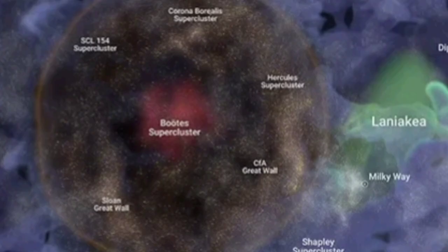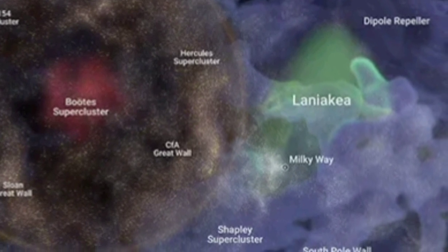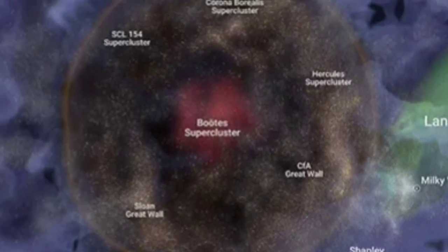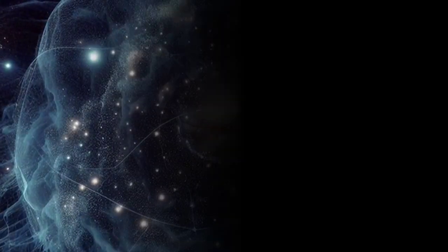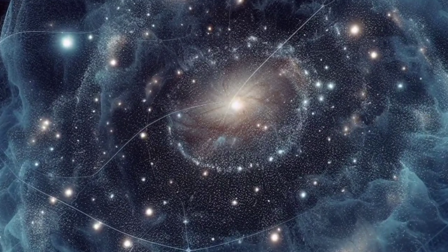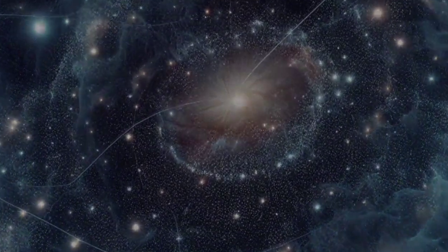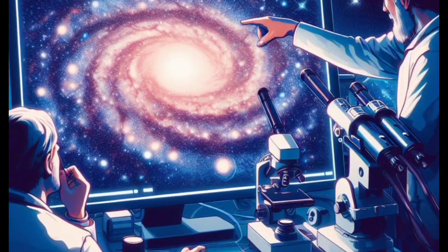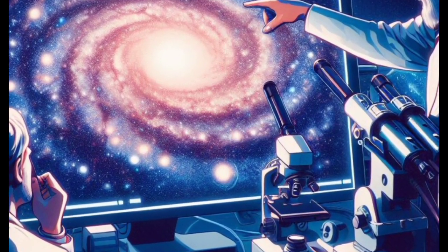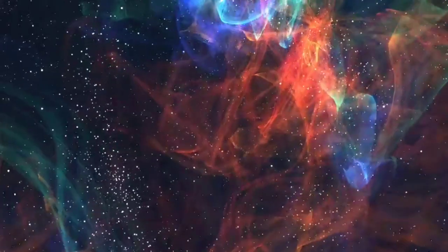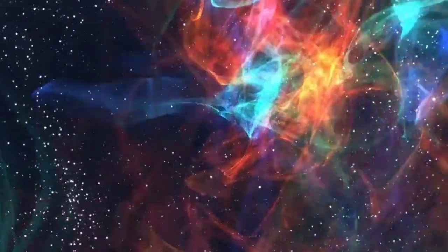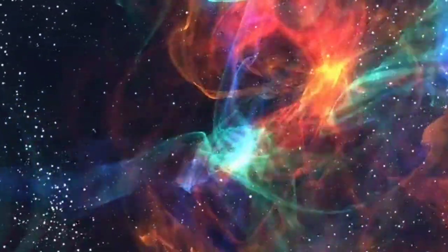BAOs are ripples in the density of the universe that were caused by the Big Bang. The cosmic bubble is a region of space that is less dense than the surrounding universe. It is thought to have formed in the early universe, when the universe was still very hot and dense. As the universe expanded and cooled, the bubble became less dense than its surroundings.